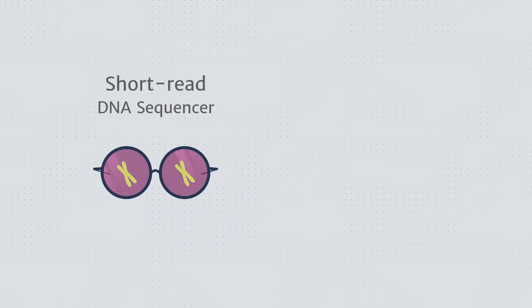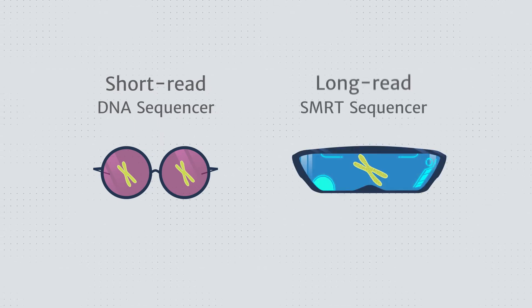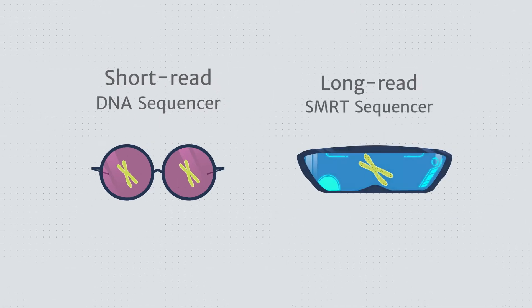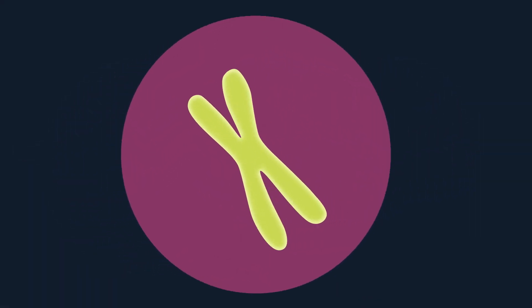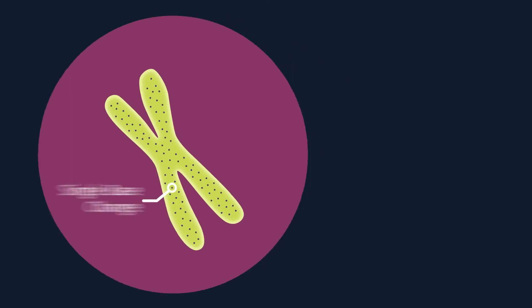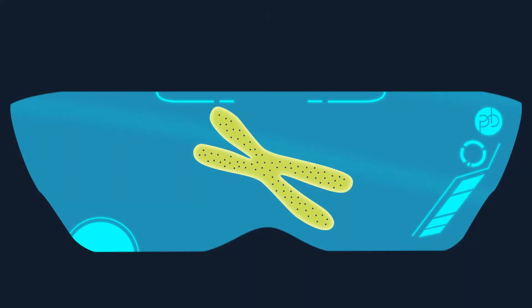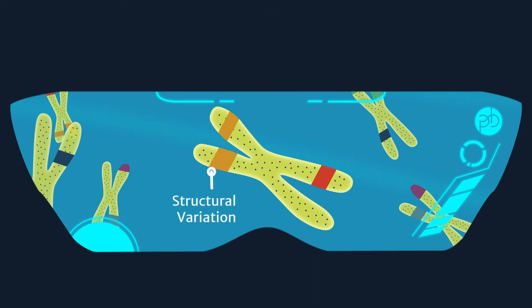Not all DNA sequencers can see the full range of genetic variations. While short-read DNA sequencers primarily let you see the single base changes, long-read smart sequencing can detect both those and over 20,000 structural variations in the human genome.